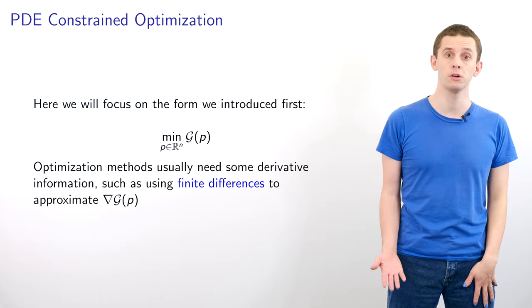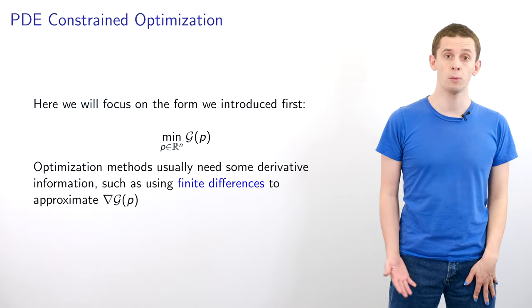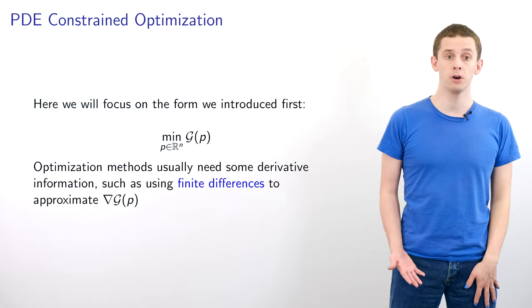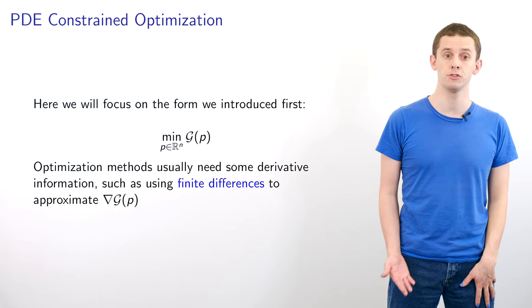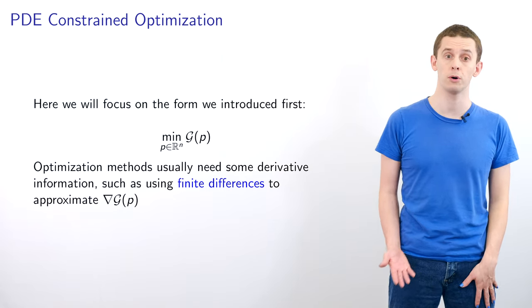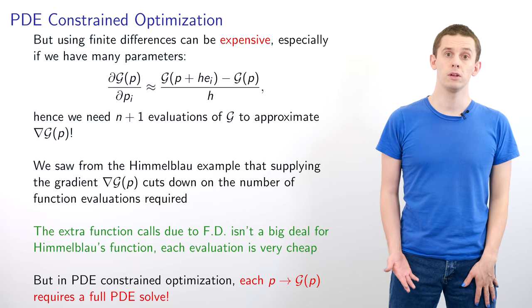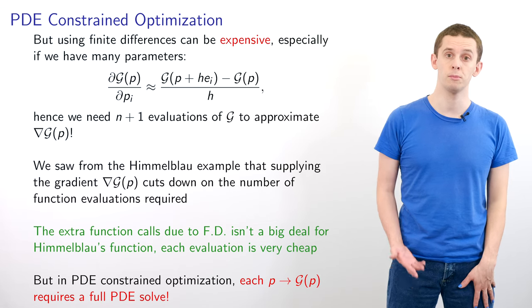We're now going to focus on the original unconstrained optimization form that we introduced at the start where we want to minimize g of p for p in R^n. Optimization methods usually need some derivative information such as using finite differences to approximate the gradient of g at p. But using finite differences can be expensive especially if we have many parameters.